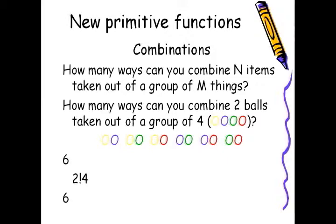Think of how many ways you can combine two balls taken out of a group of four. Imagine they're all different colors. Well, you can have a yellow and a blue, a yellow and a green, a yellow and a red, a blue and a green, a blue and a red, and finally a green and a red. So there's six ways you can pick two balls out of four different ones. So there's a function for that in APL, it's called combination or bang, and it returns you the number.